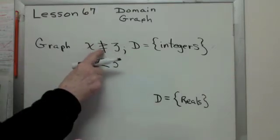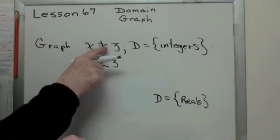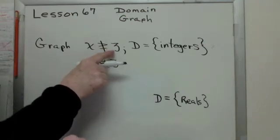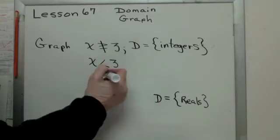If there's an equal bar in this one, there's not one in this one. So if that was x not greater than 3, then I would say less than or equal to 3. So be careful of that.